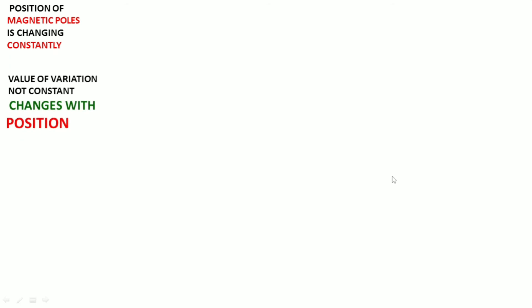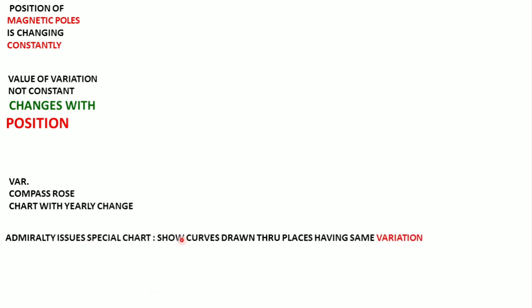The position of the magnetic poles is not constant — it keeps on changing. So the value of variation will not be constant. It will change with position, as I showed you — if you are on the east or on the west, the thing changes. And if the poles change, then the value of variation would change again. Variation can be found on a chart — it is marked on the compass roses on your chart, with whatever the yearly change is.